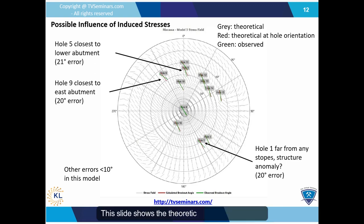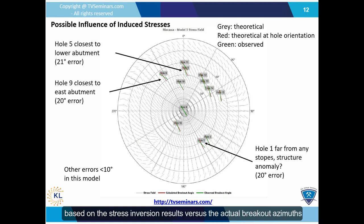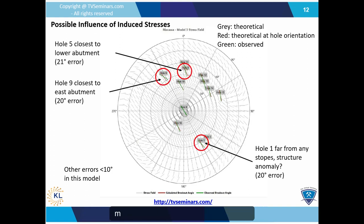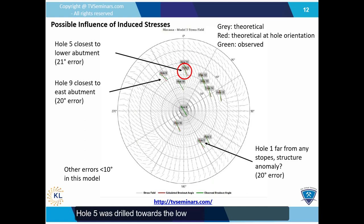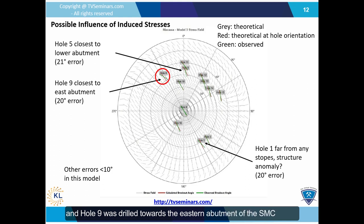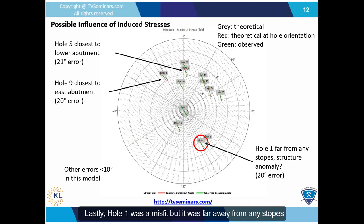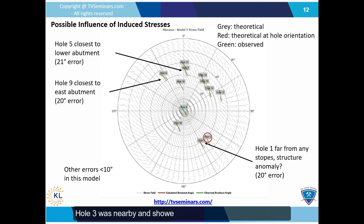This slide shows the theoretical breakout azimuths based on the stress inversion results versus the actual breakout azimuths observed in each hole. We have three holes that still show much larger residual error than the others. Hole 5 was drilled towards the lower abutment of the SMC stopes, and hole 9 was drilled towards the eastern abutment of the SMC stopes. Hole 1 was a misfit but it was far away from any stopes, so we do not expect an induced stress influence — hole 3 was nearby and showed good fit, so we suspect some natural structural influence on hole 1.